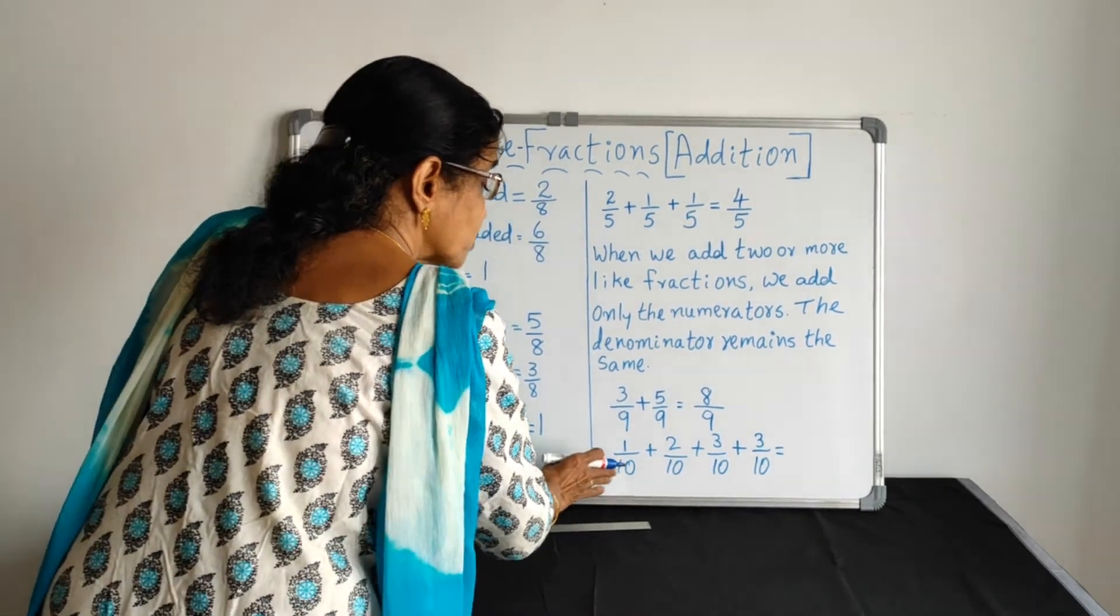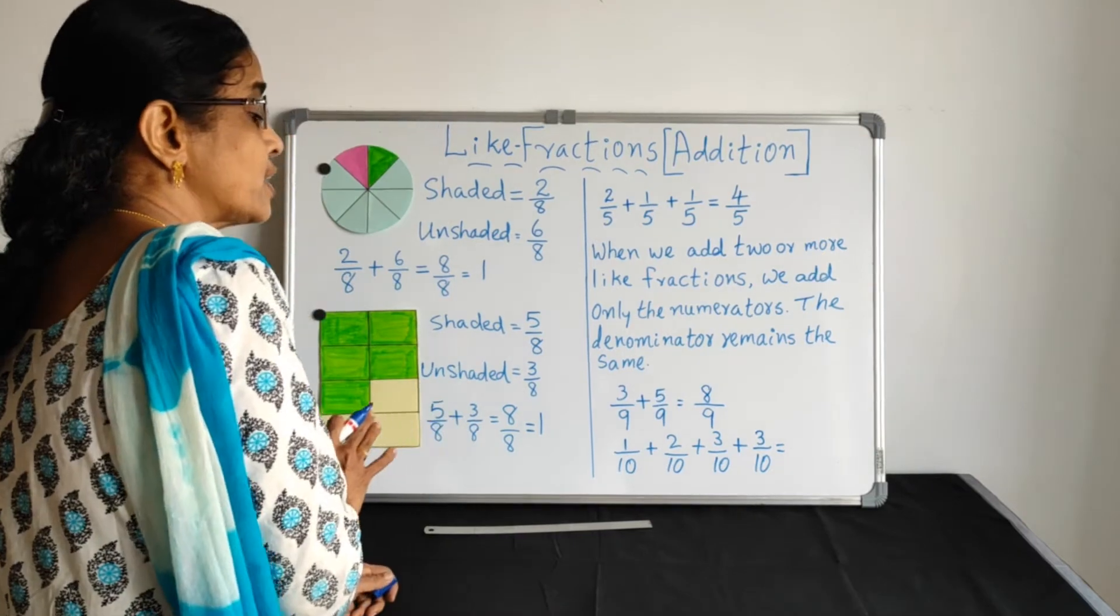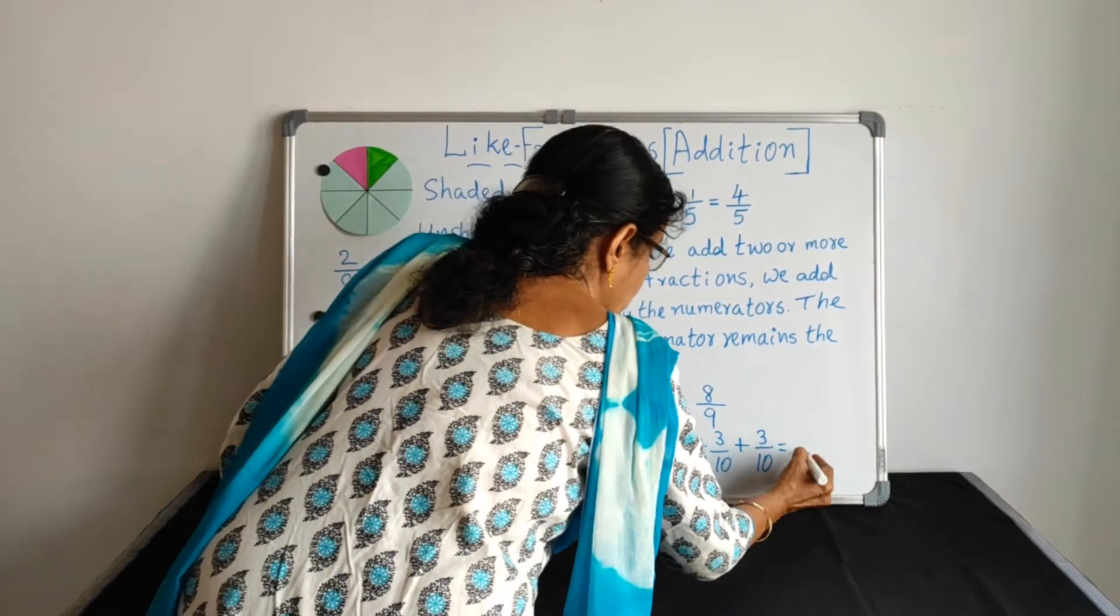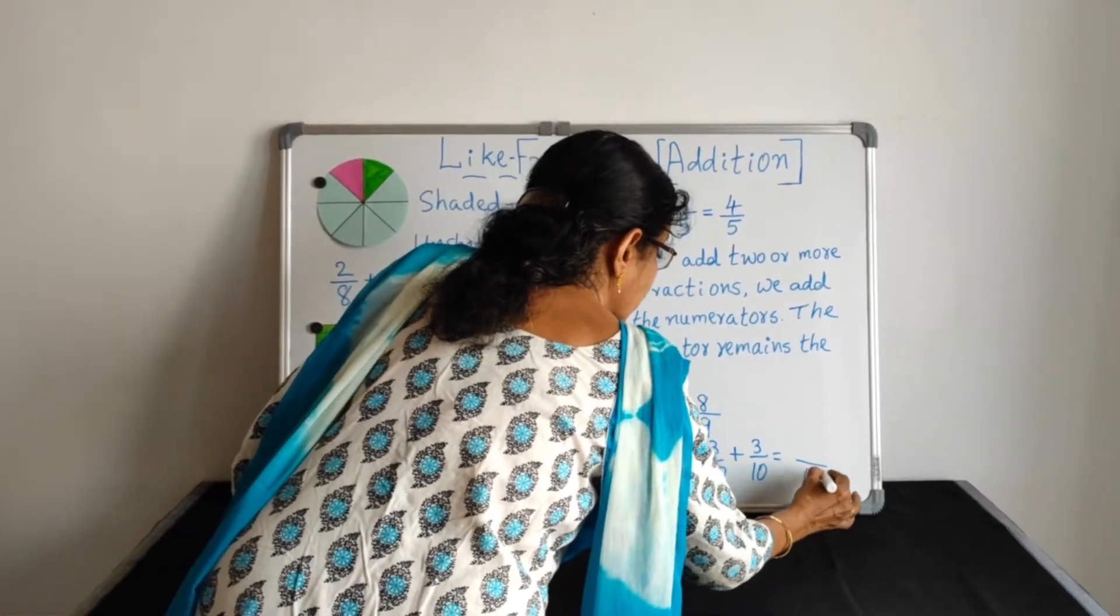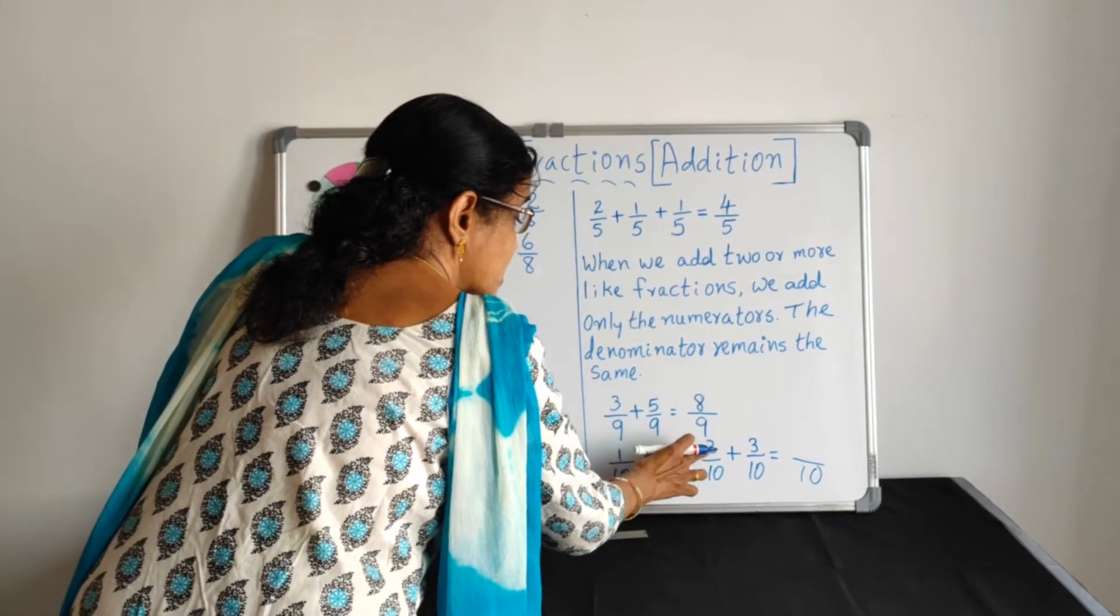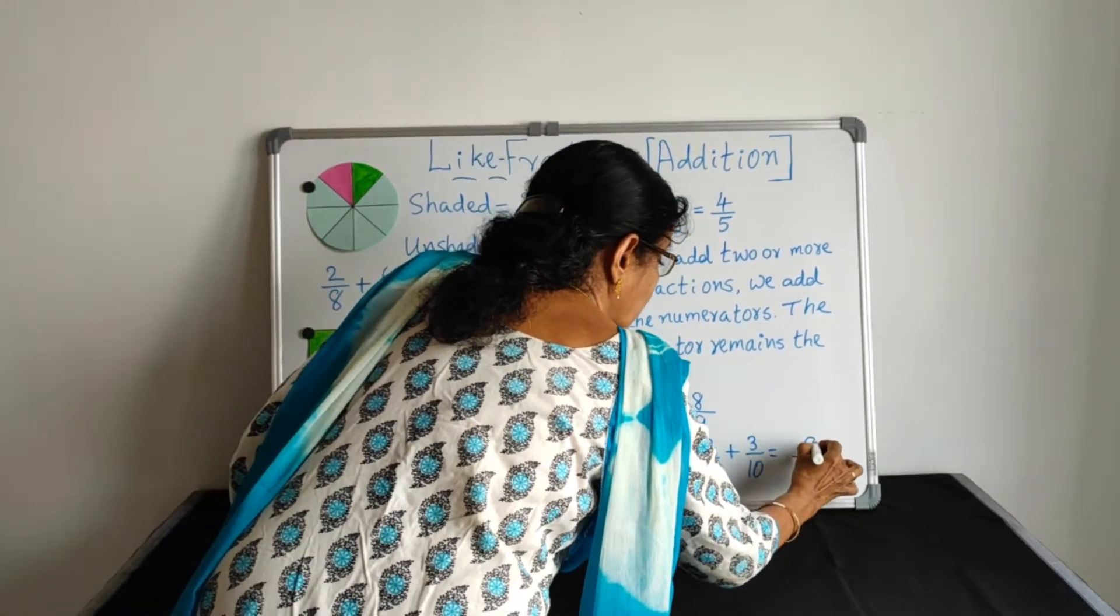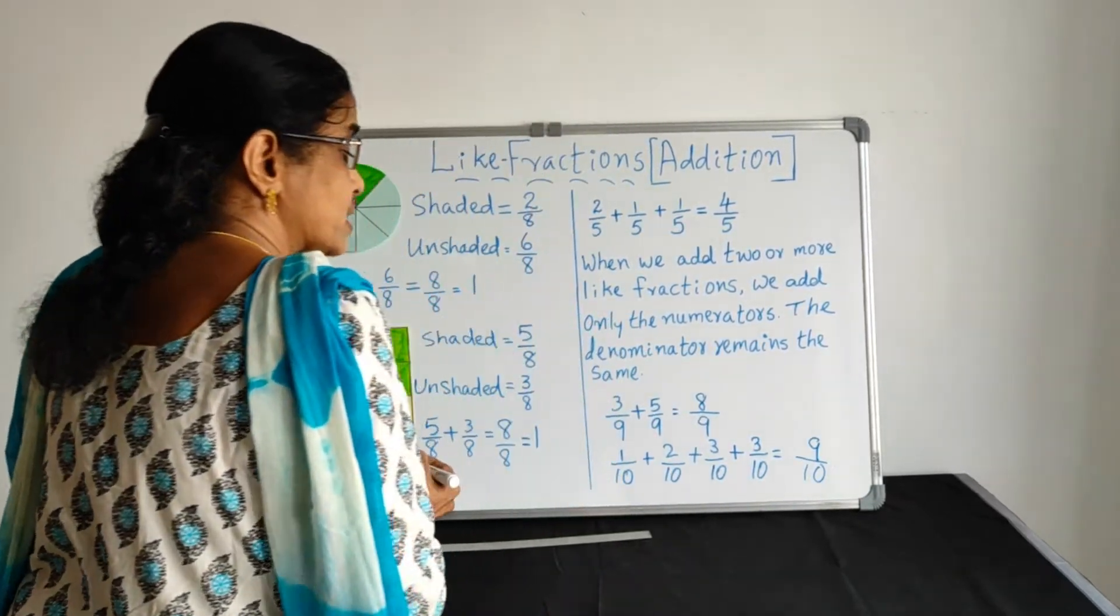Here, it can be 3 fraction, 4 fraction. Just add the numerator and put it there. Denominator, there is no change. 1 plus 2 is 3, 3 plus 3 is 6, 6 plus 3 is 9. 9 by 10.